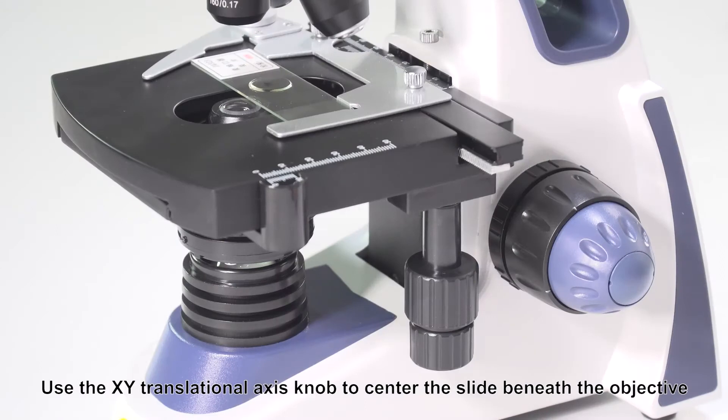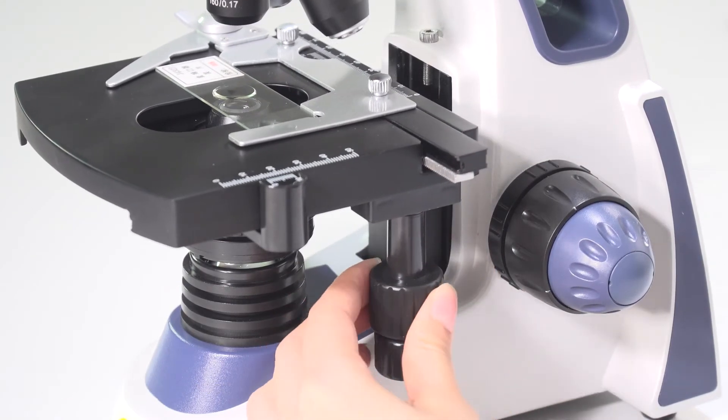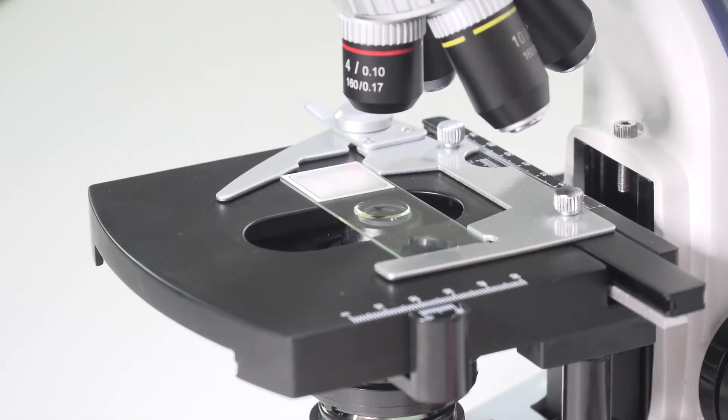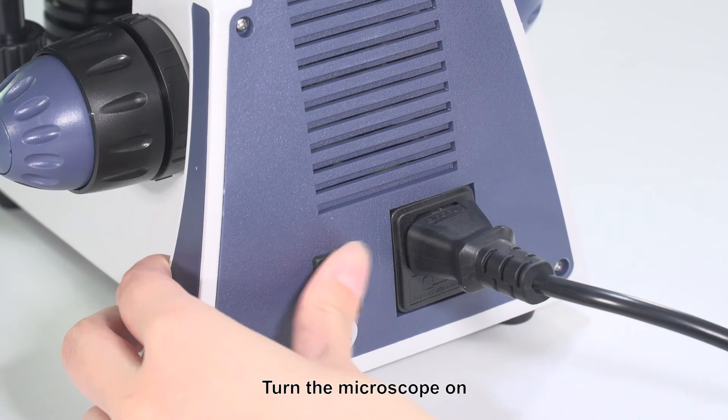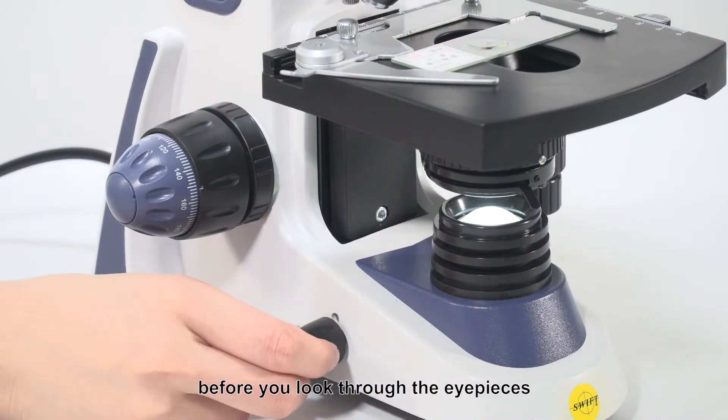Use the XY translational axis knob to center the slide beneath the objective. Turn the microscope on and set the bulb to the lowest illumination setting before you look through the eyepieces.